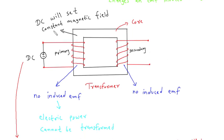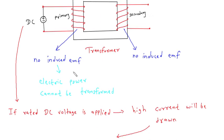DC will set constant magnetic field. On left side primary winding of transformer is present and on right side secondary winding of transformer is present. If we give DC to transformer, there is no induced EMF in primary winding of transformer. So the electric power cannot be transformed.